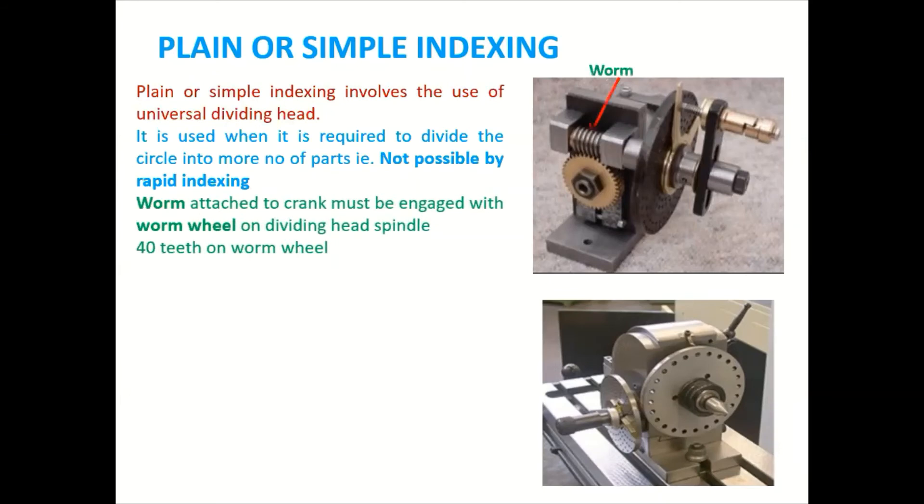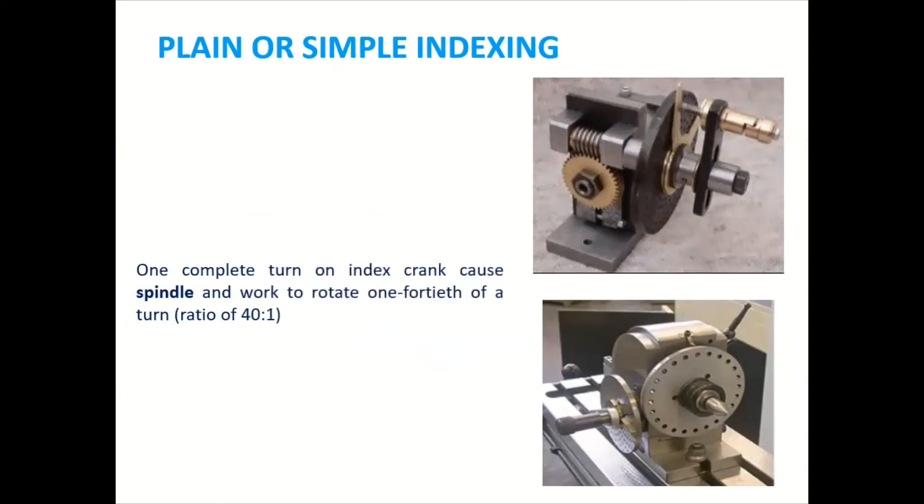So here the worm and the worm wheel, they are both engaged with the spindle and worm wheel having 40 number of teeth. I can see in the diagram. Now one complete turn of the index crank causes spindle and the work to rotate one fortieth of the turn.